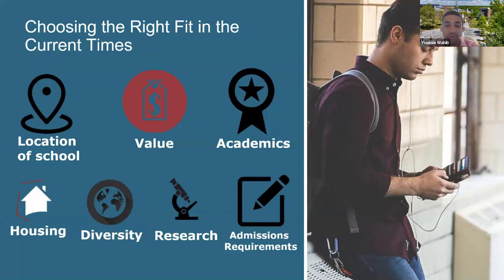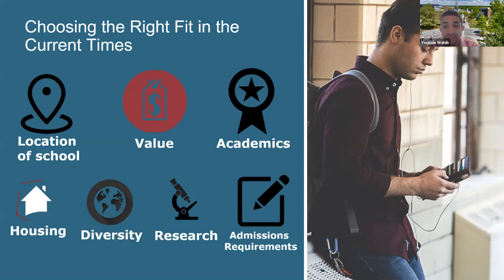Academics refers to all the academic programs offered by the institution. When asking about academics, you want to ask what the rankings of those programs are, whether nationwide or worldwide. Housing is also very important as an international student coming to the United States — you want to know if housing is guaranteed, whether for just the first year or all four years, and what's included: gym, other activities, and how many people live there.